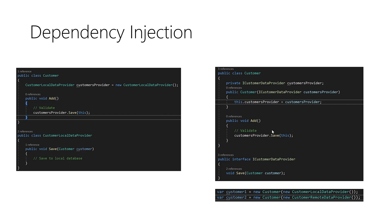It could be a remote data source, local data source, SQLite, Oracle, or even a static list. So if you want to test this class, you can simply implement this interface and create a mock data provider that saves to a static list just for testing. You can then easily test the Customer class. This is one of the most important benefits. The second benefit is that the code is decoupled - each class doesn't care about anything else, it's an independent class.